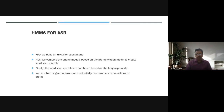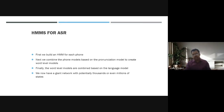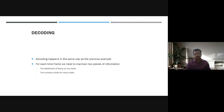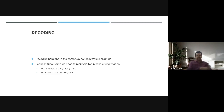In speech recognition, we now have a giant network with potentially thousands and even millions of states. These states can be converted into representations for different languages. The likelihood of being at any state or transitioning from a previous state determines how decoding happens, in the same way as the previous examples.